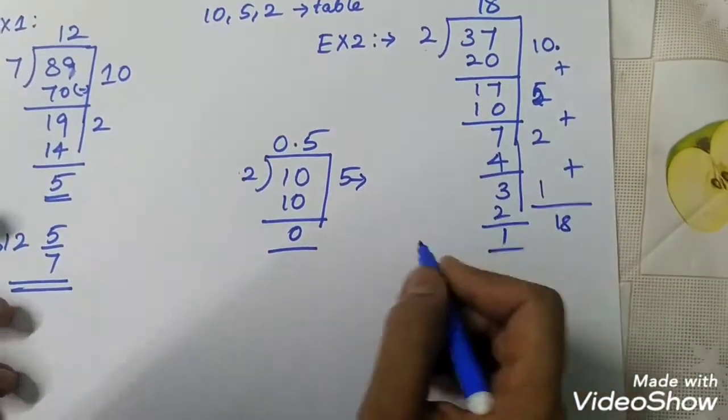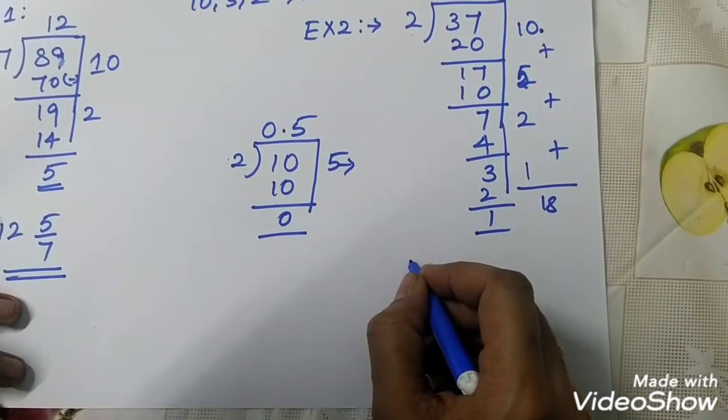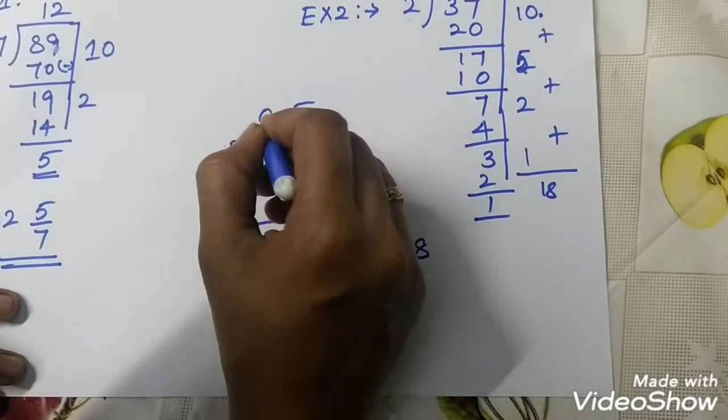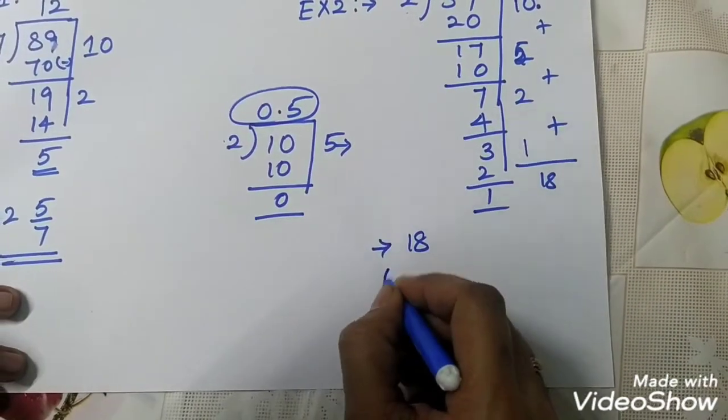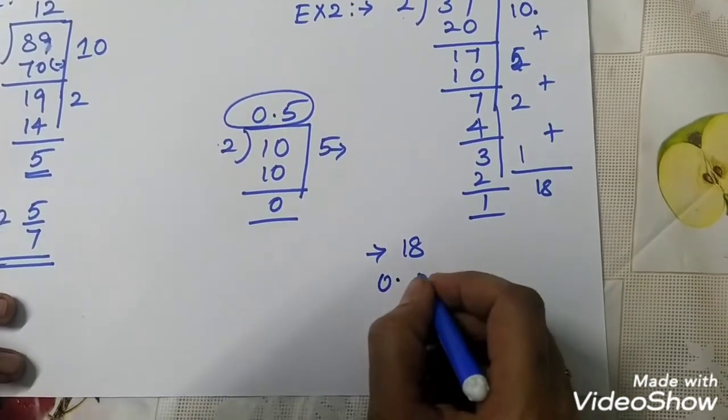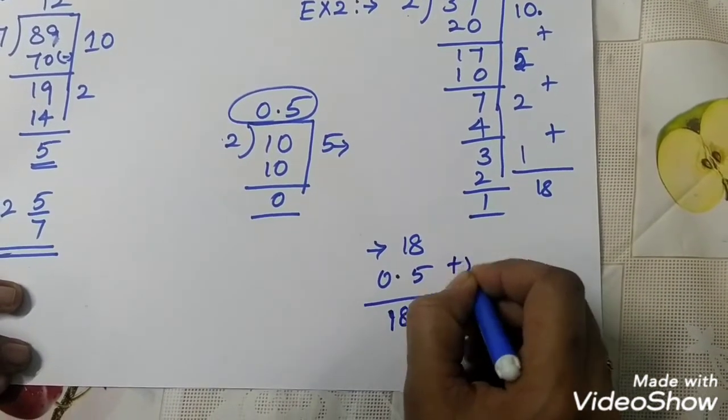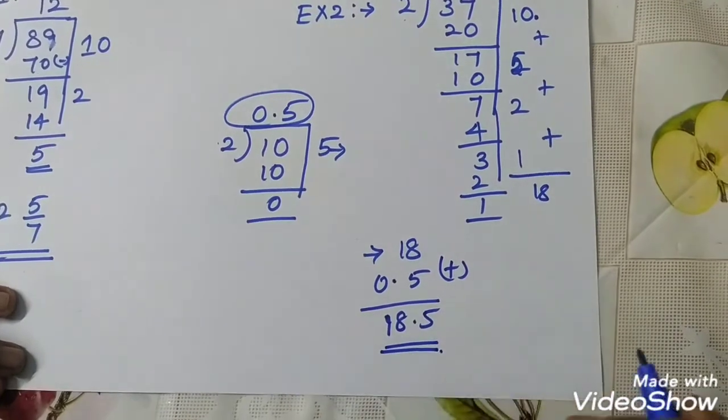So, 5. So, how can you add here? Already the answer is 18. We have, so, here answer is 0.5. So, 0.5. How can you add it? 18, 0.5. This is answer.